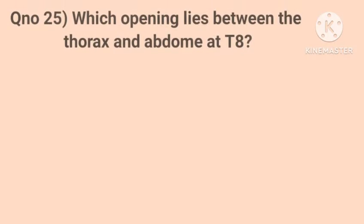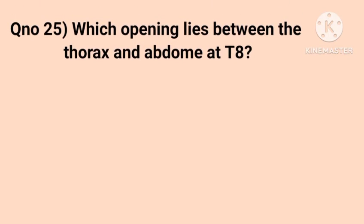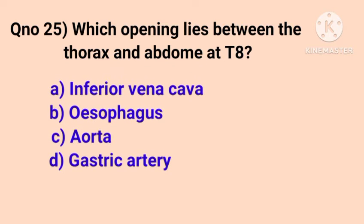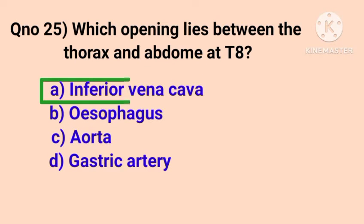Question number 25. Which opening lies between the thorax and abdomen at T8 level? Correct answer is option A, inferior vena cava.